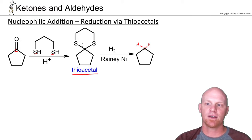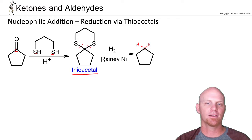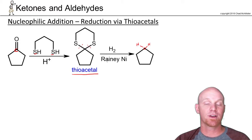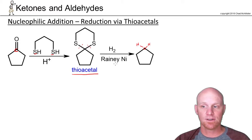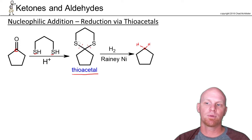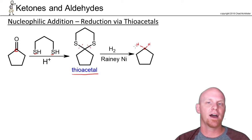When you add H₂ and Raney nickel, you'll break both of these bonds here — and you don't have to know the mechanism. H₂ with the appropriate catalyst, specifically Raney nickel, will replace both bonds to sulfurs with bonds to hydrogens.